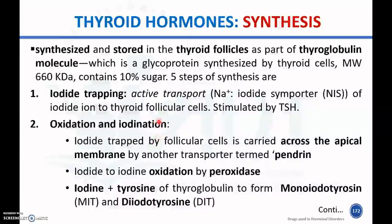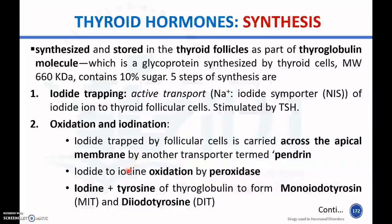The second step is oxidation and iodination. The iodine trapped by follicular cells is carried across the apical membrane by another transporter called pendrin. This iodide transported to the apical membrane is oxidized to iodine by peroxidase enzyme. The oxidized iodine then combines with the tyrosine of thyroglobulin to form monoiodotyrosine (MIT) as well as diiodotyrosine (DIT).